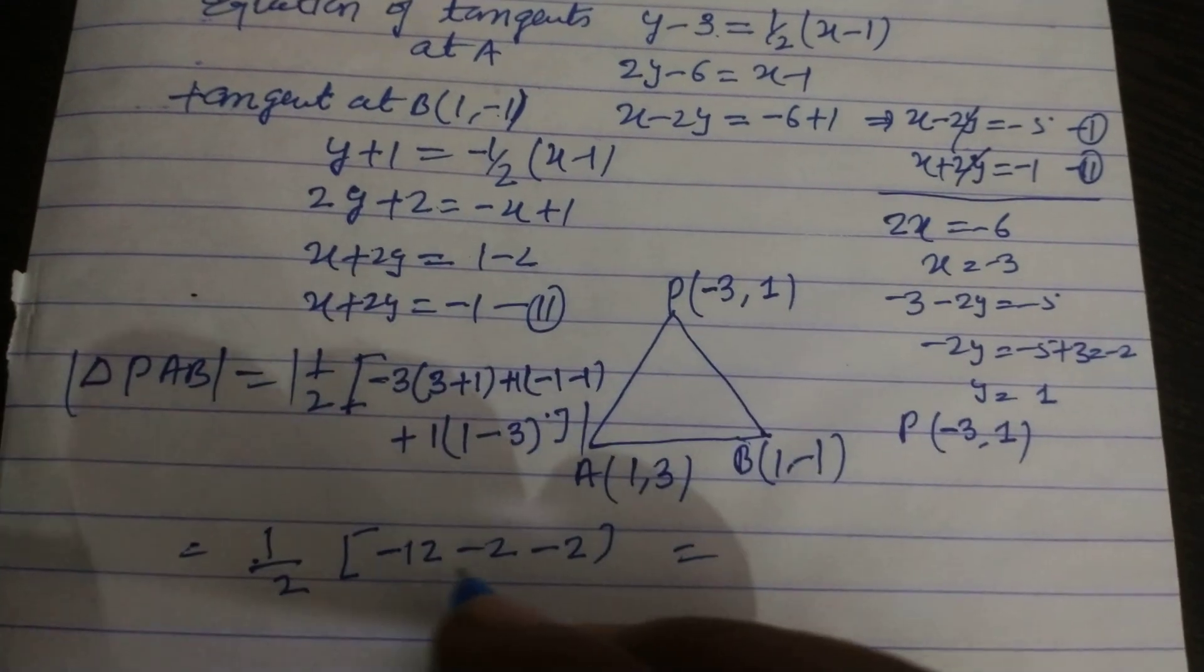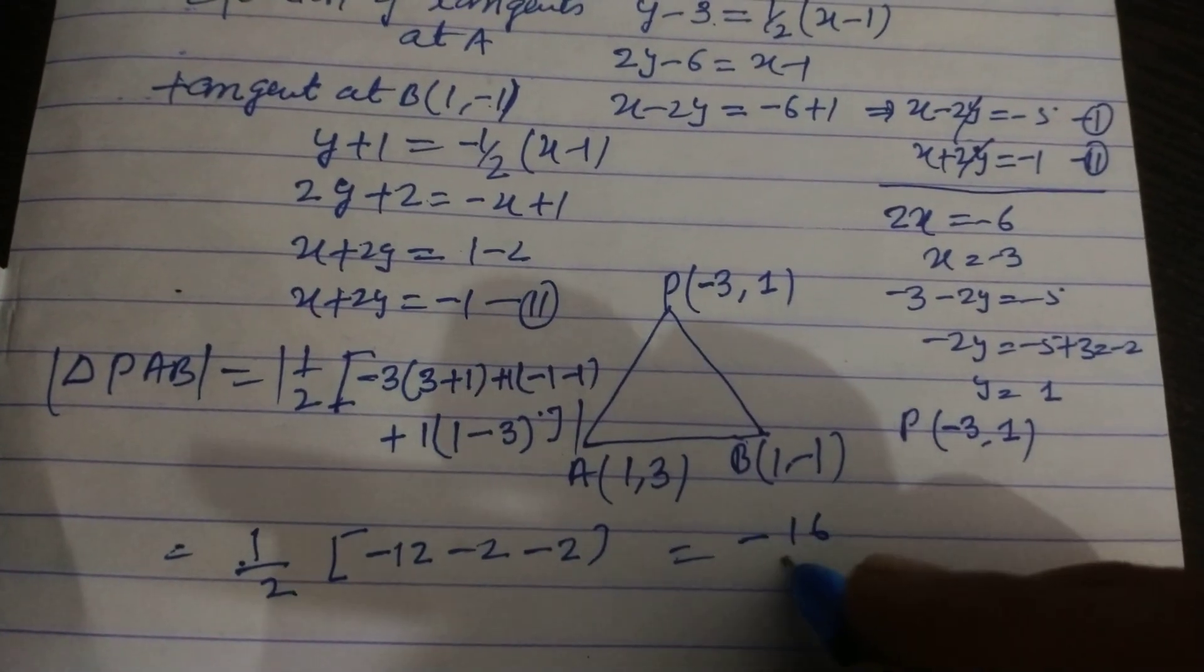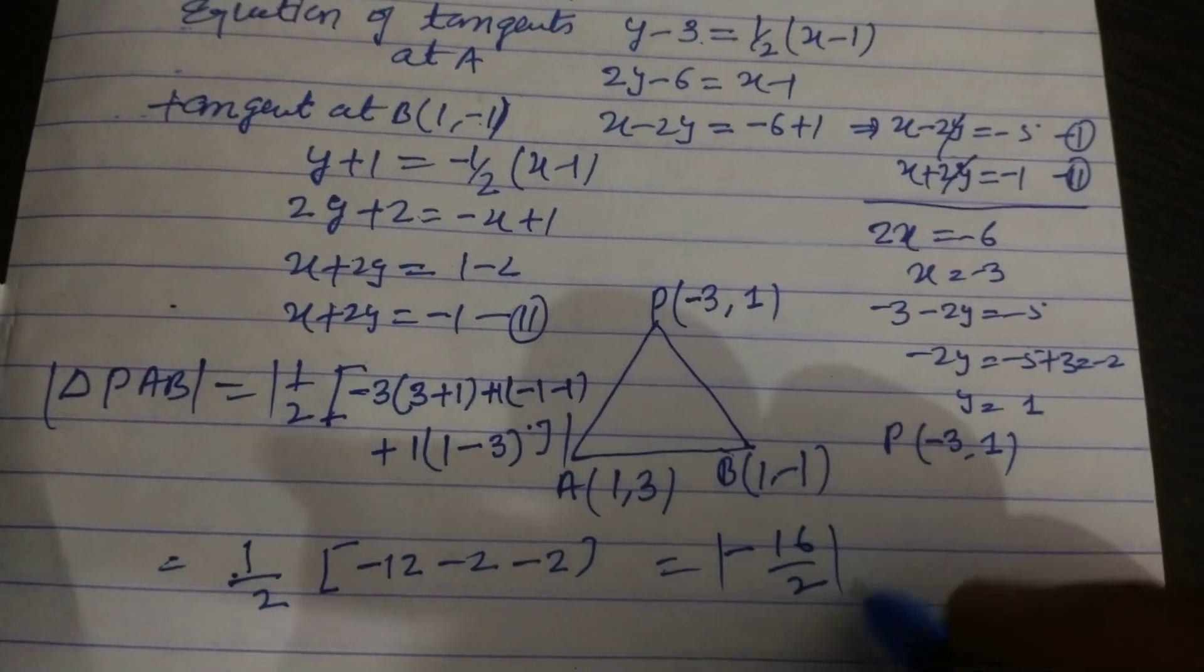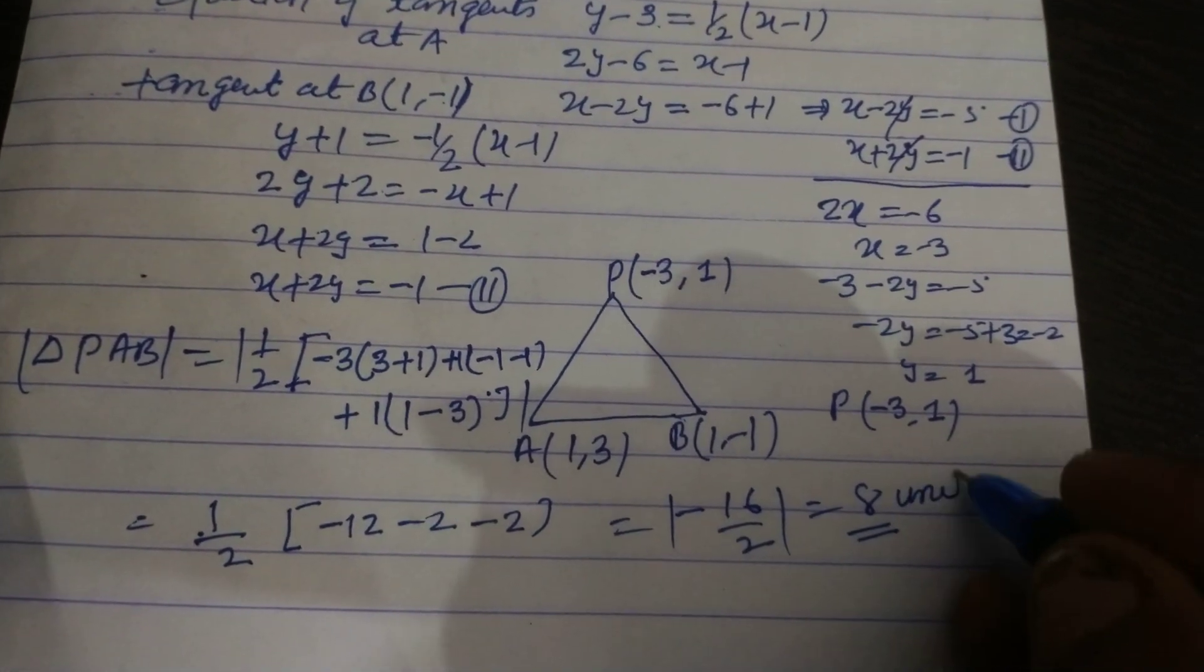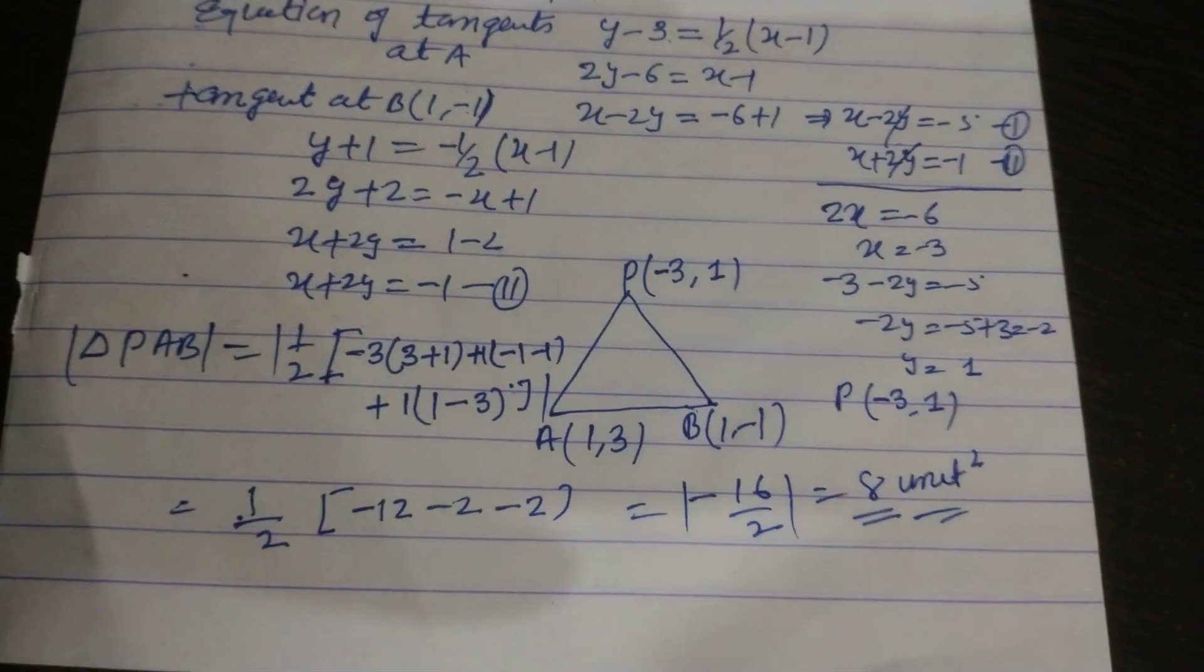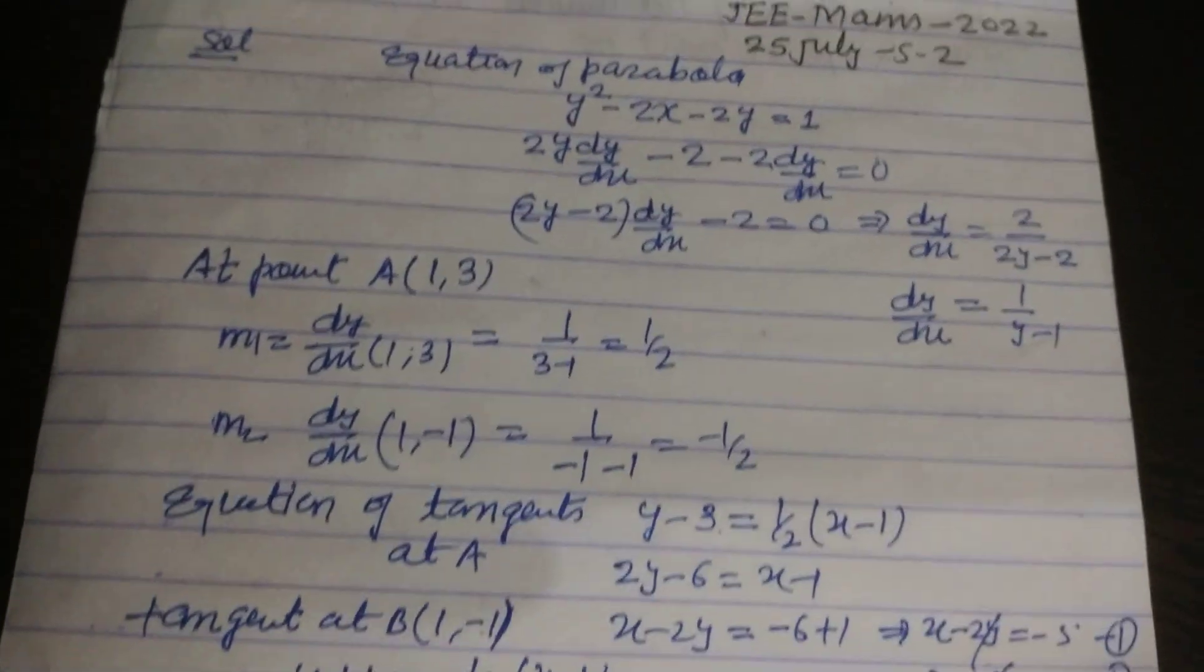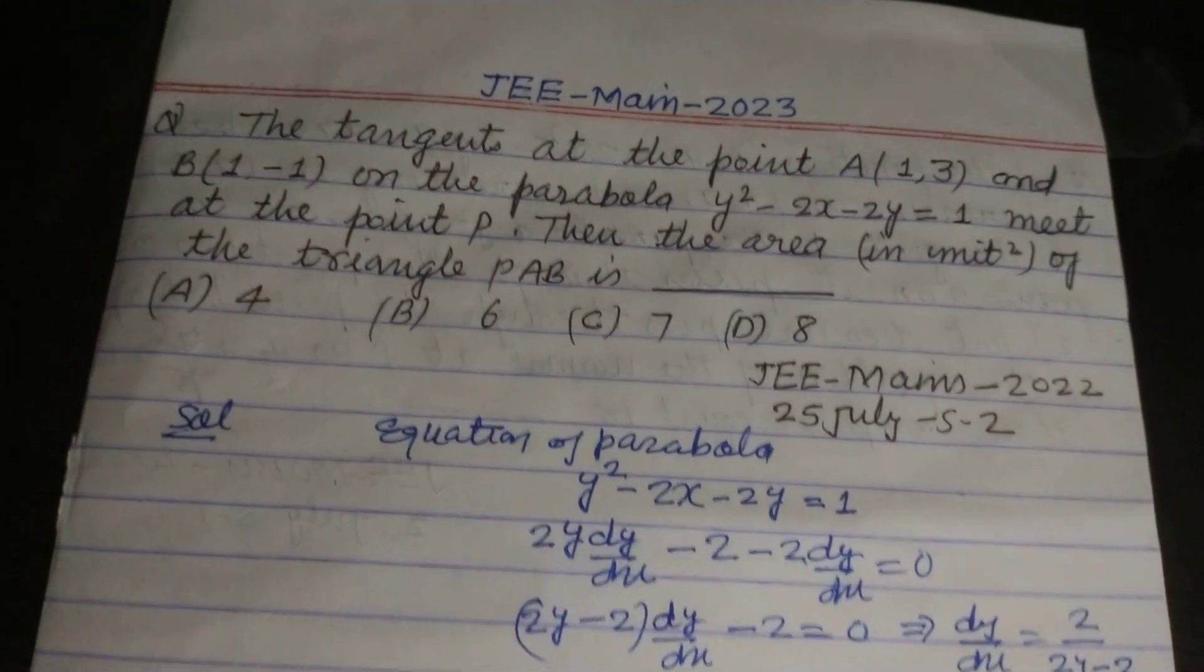And this is 12, 4, 16, so -16/2, this is 8. So answer is 8 unit square. So student in this way we solve this problem. I hope you got it, please like the video, subscribe the channel, thanks for watching.